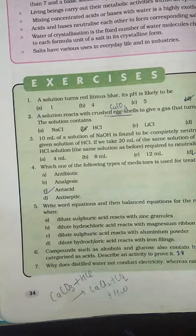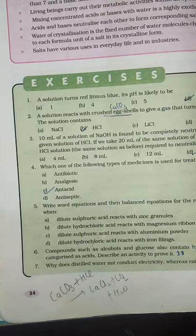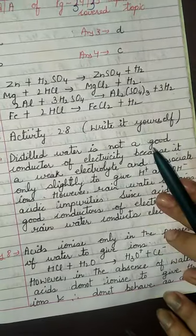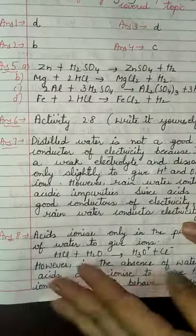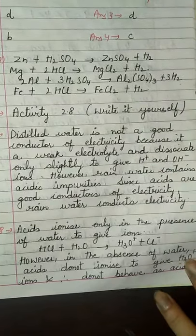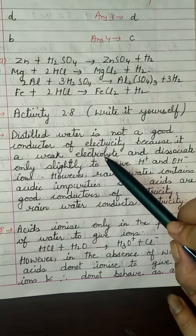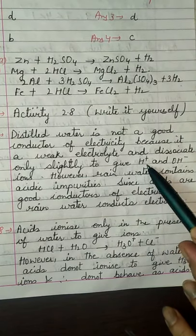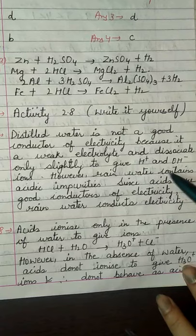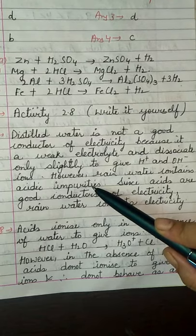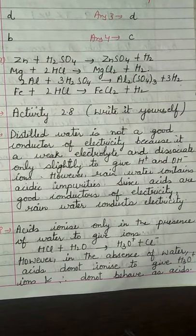Question number 7: Why does distilled water not conduct electricity whereas rainwater does? Distilled water is a weak electrolyte and dissociates only slightly to give H⁺ ions and OH⁻ ions. However, rainwater contains acidic impurities and dissociates into ions completely, so it conducts electricity.